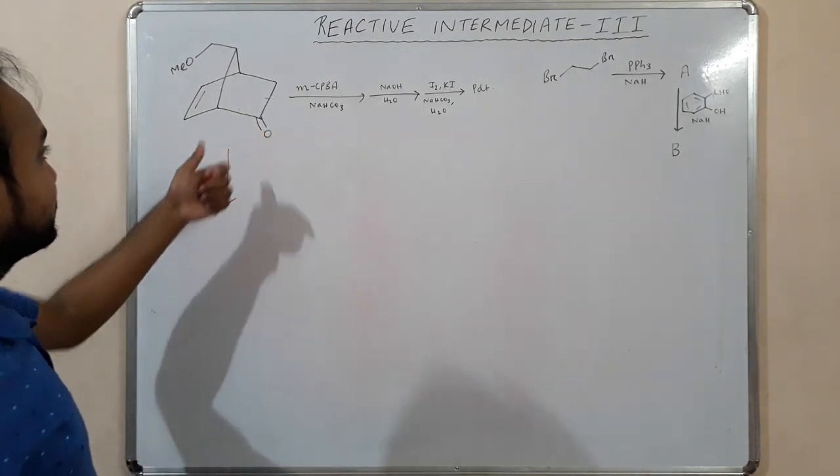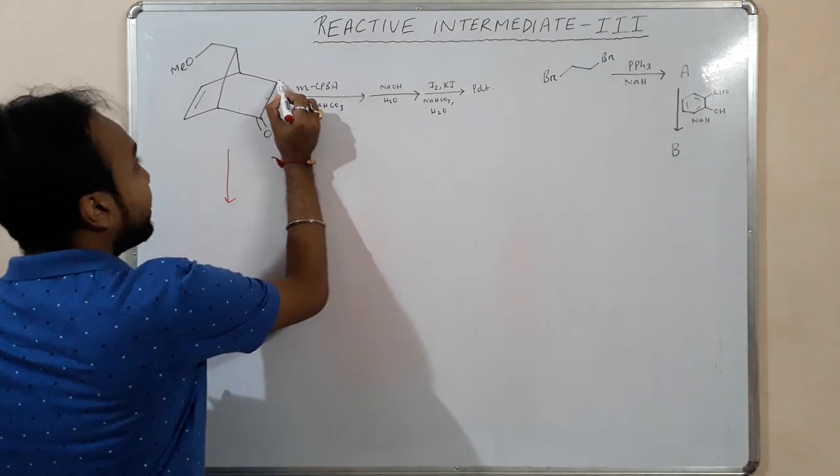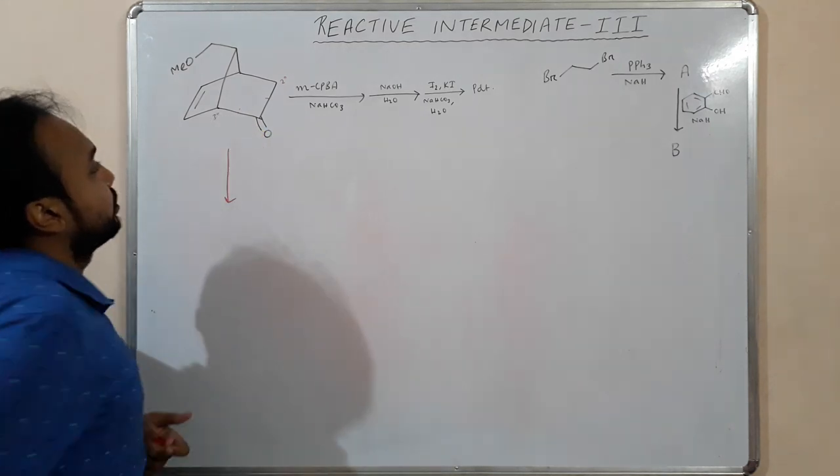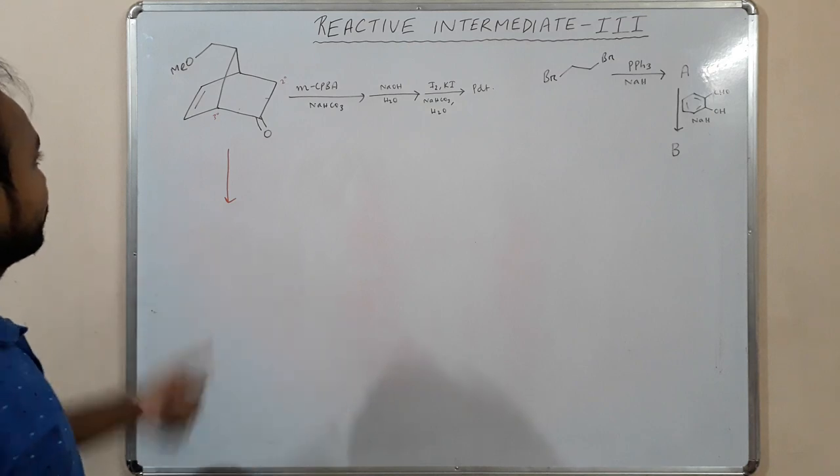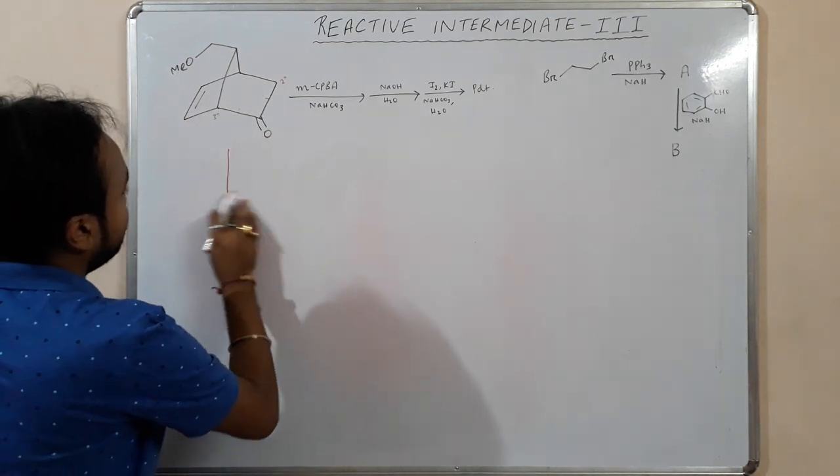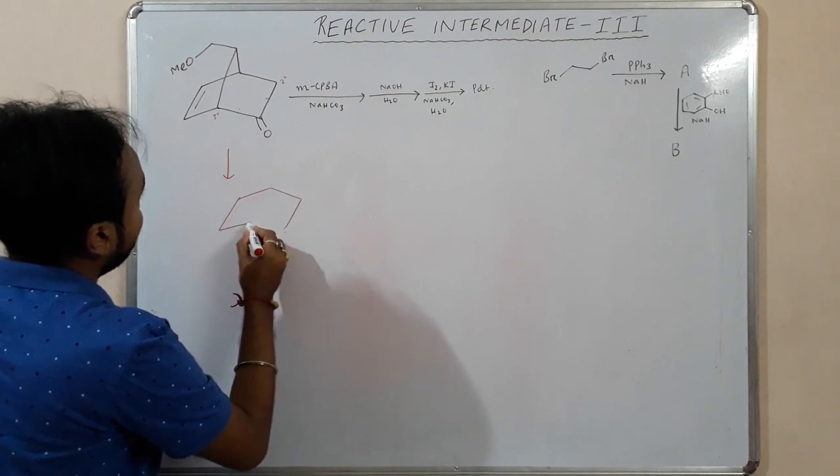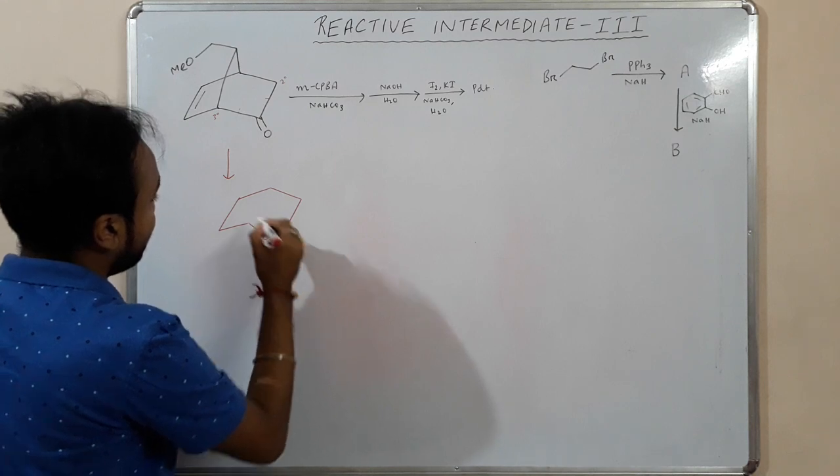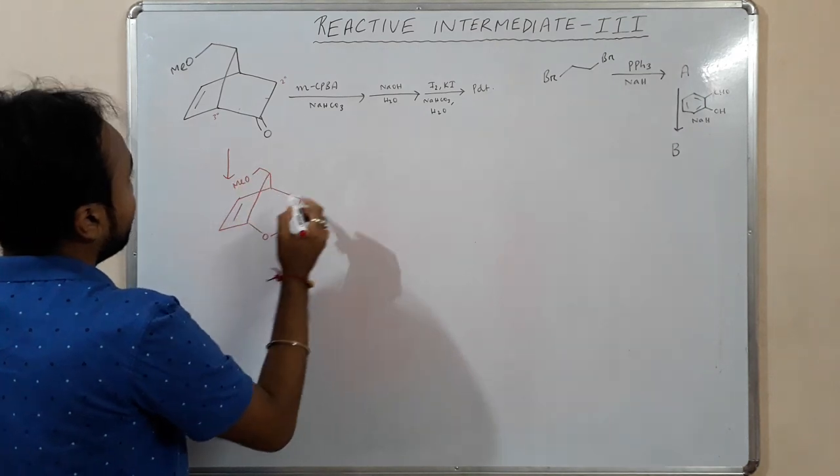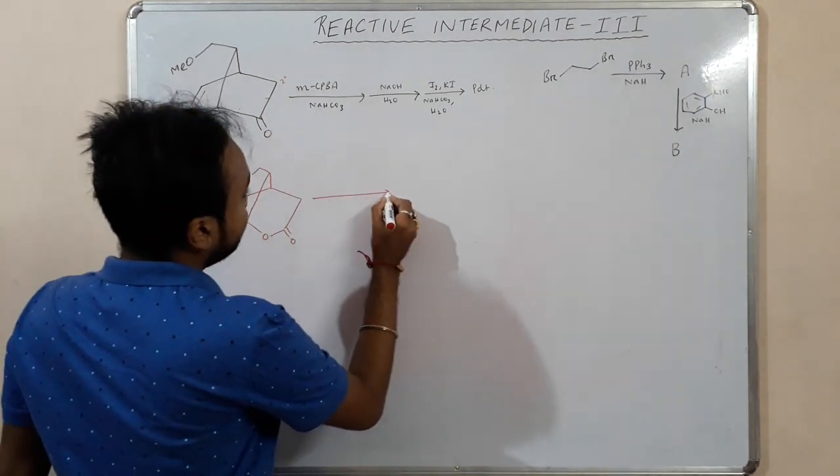What will happen - either the oxygen will insert here or it will insert here. Let's see which one has the highest migratory aptitude. Here it is a secondary two-degree carbon and here it is a three-degree carbon. Three-degree carbon has more migratory aptitude than two-degree, so this one will migrate. Oxygen will get inserted in between this point. Just writing the product.